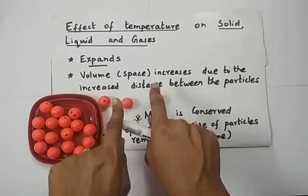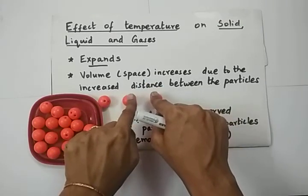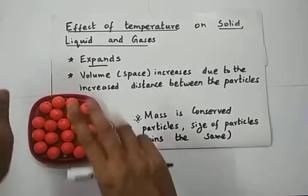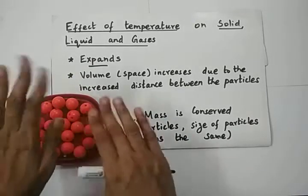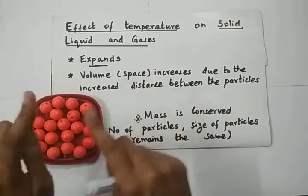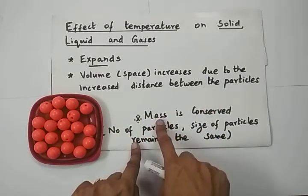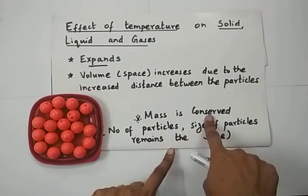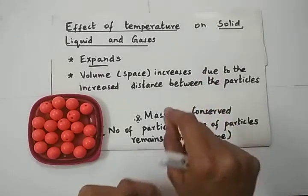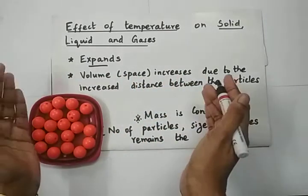Why is there an increase in volume? Because of the increased distance between the particles of the material. But what happens to the size of each particle — does it undergo any change? No. The size of the particles nor the number of particles have changed. The number of particles will remain the same and the size of each particle will remain the same. Only the distance between the particles increases. During expansion, since the number of particles and the size of particles remain the same, there will be no change in the mass of that substance — the mass is conserved. The only quantity that changes is the volume, the space occupied by the molecules.